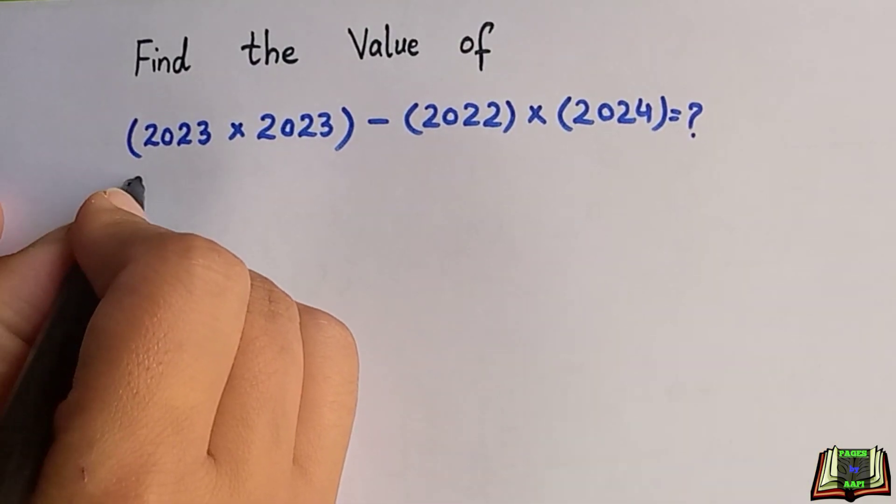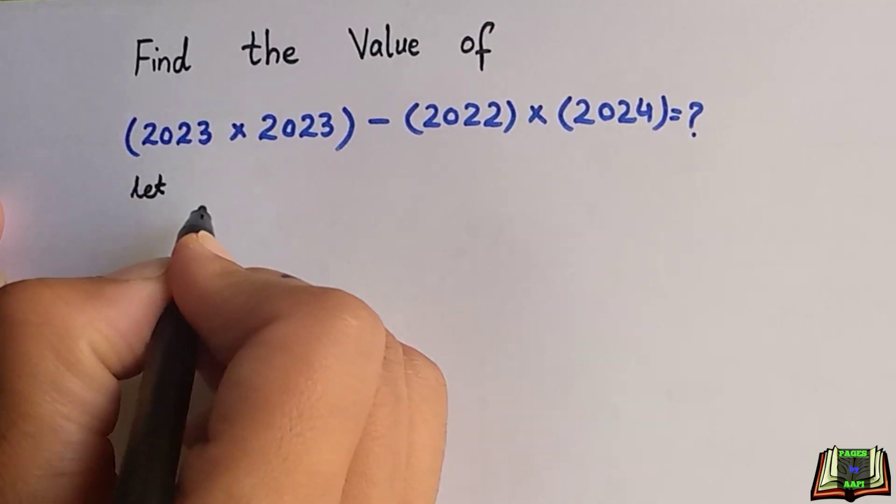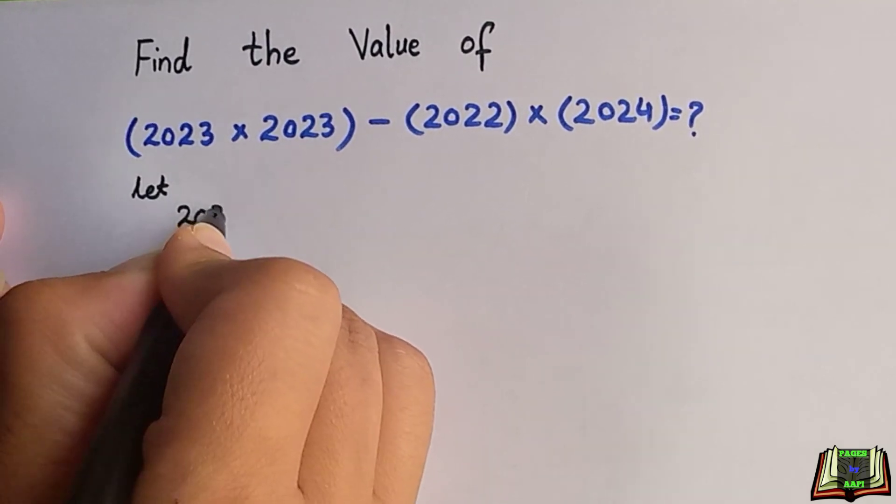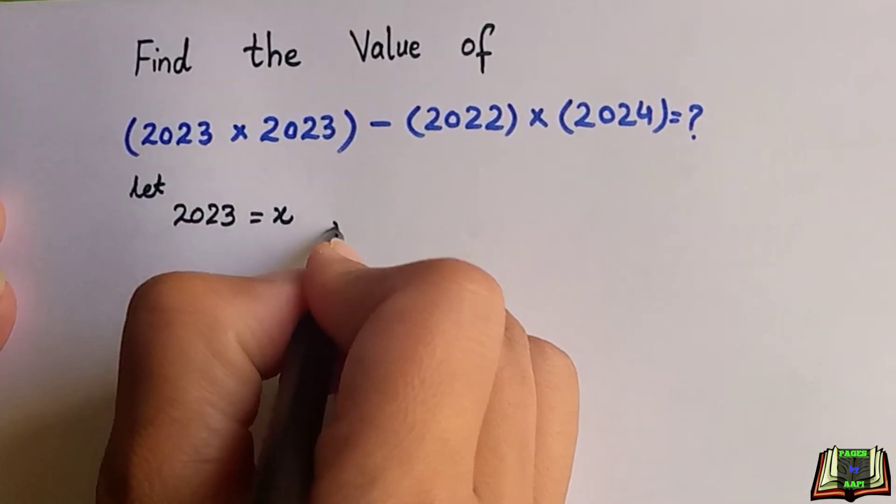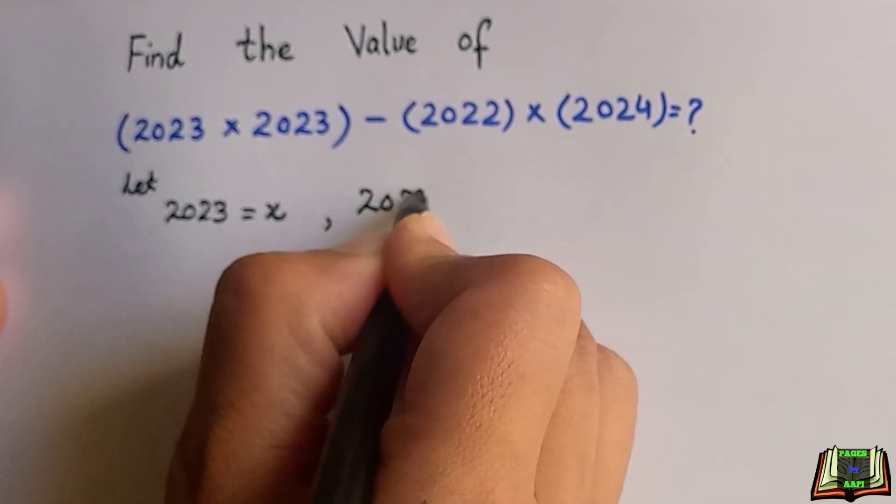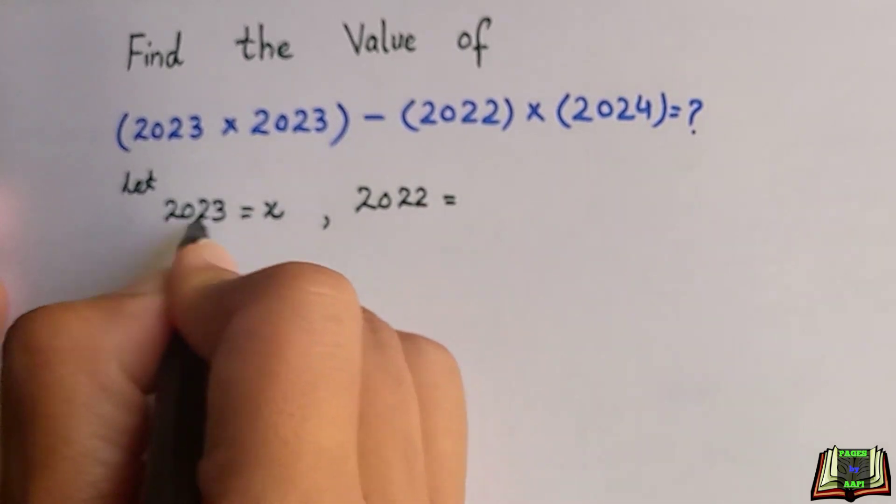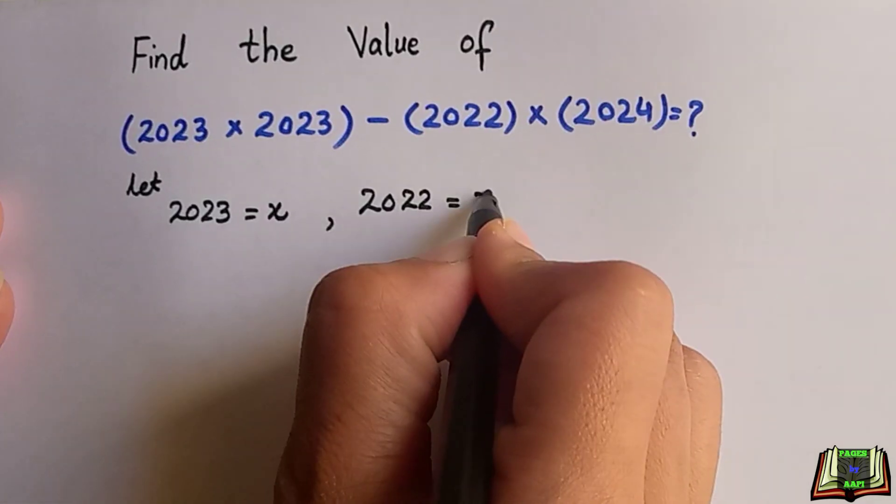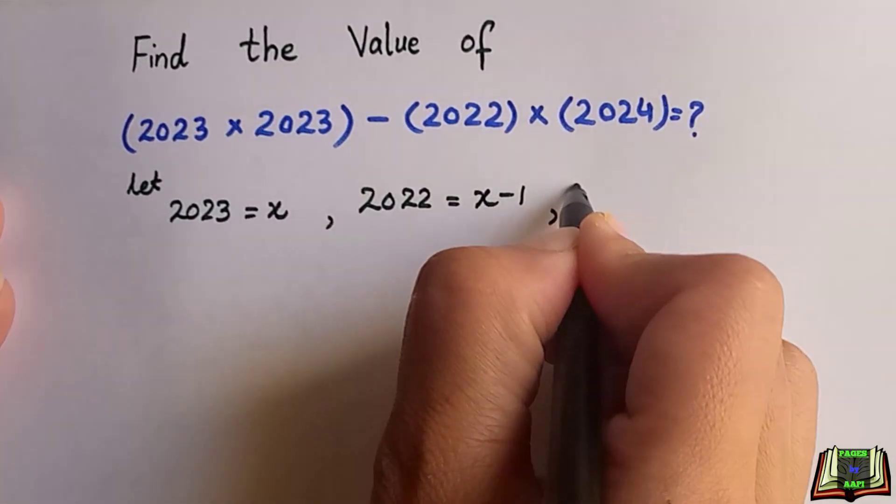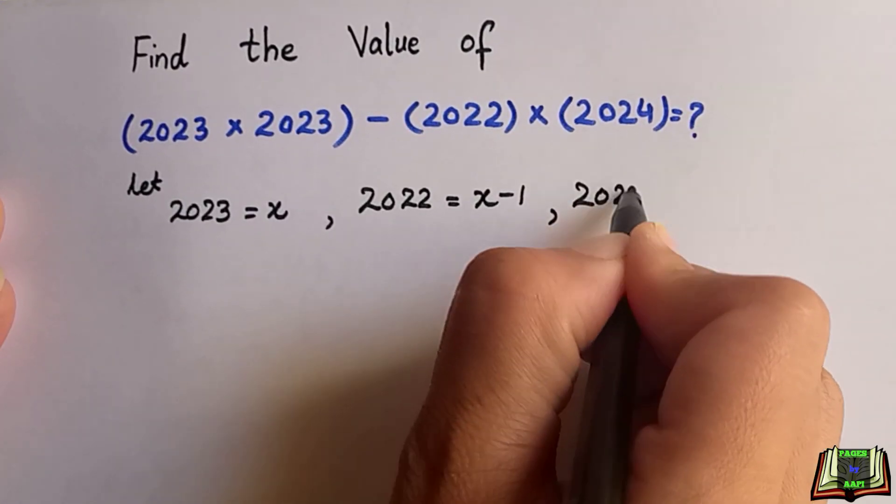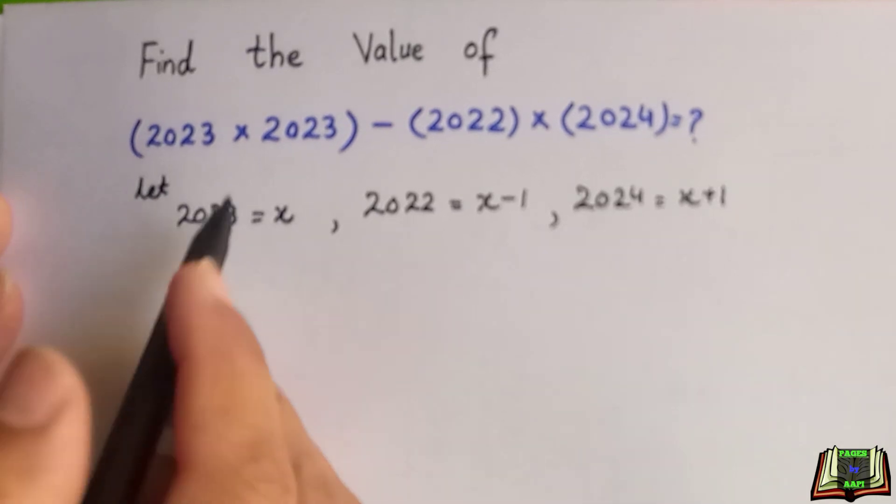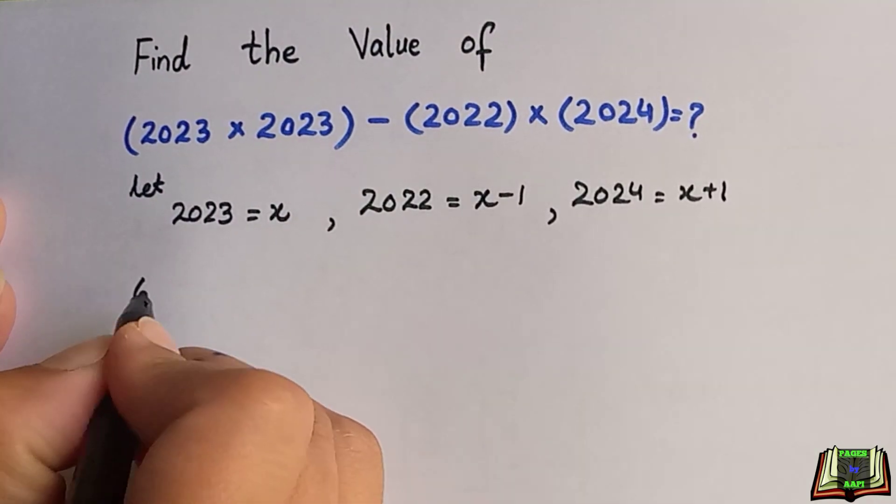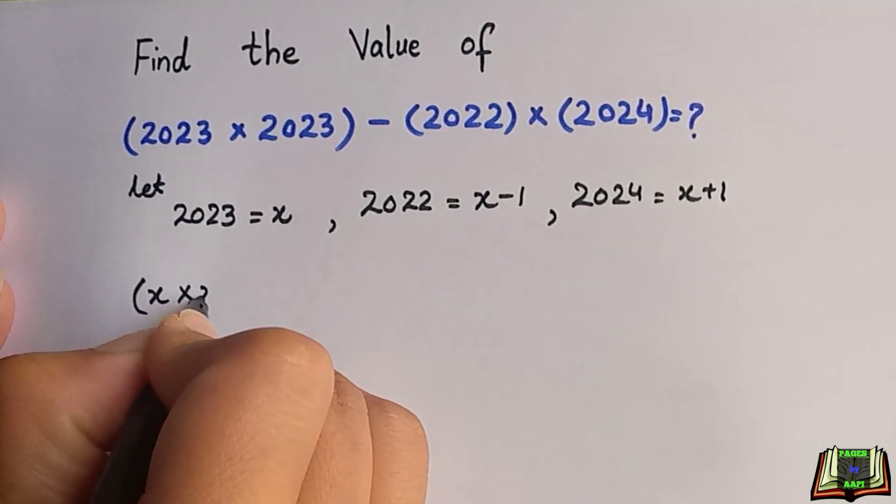Suppose 2023 as x, so 2022 will be x minus 1, because we subtract 1 from x it will be equal to 2022. And 2024 is x plus 1.